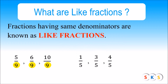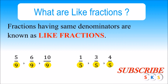Here we have more three fractions and the denominator of all three fractions are same. Therefore 1 upon 5, 3 upon 5, and 4 upon 5 are like fractions.